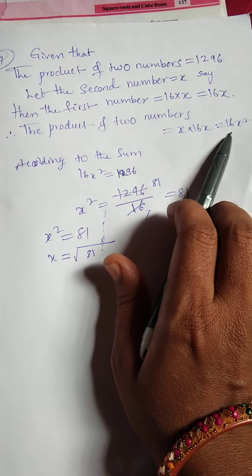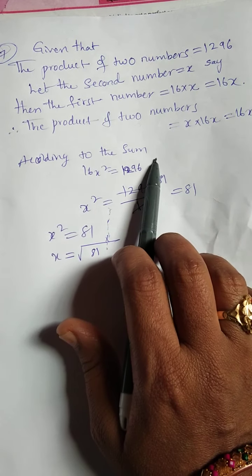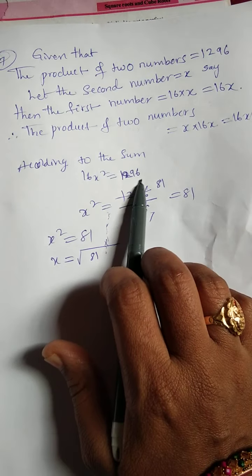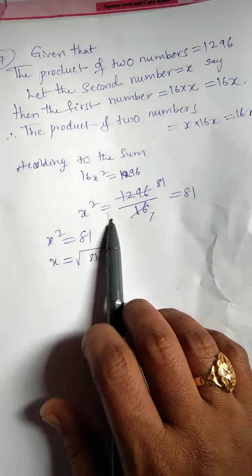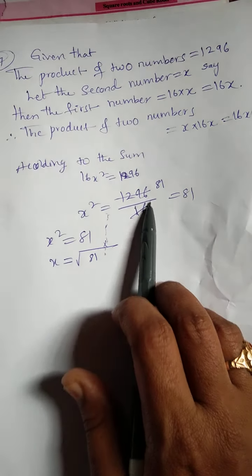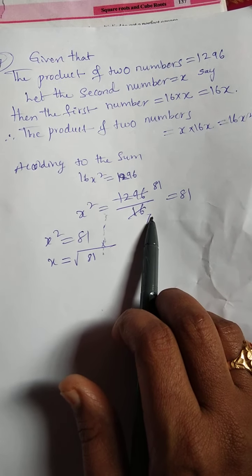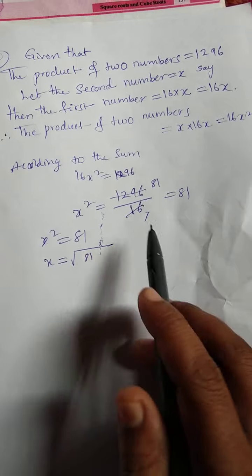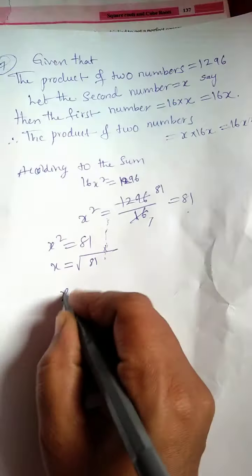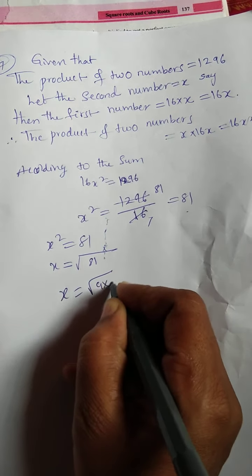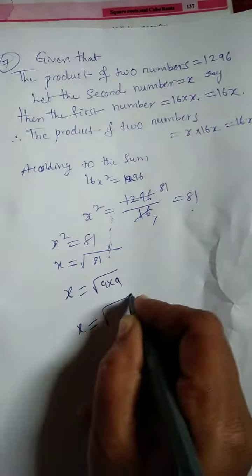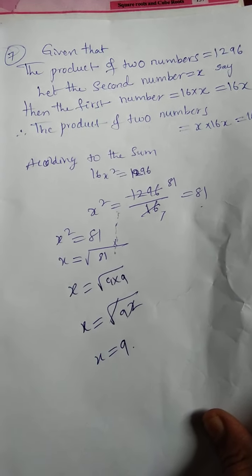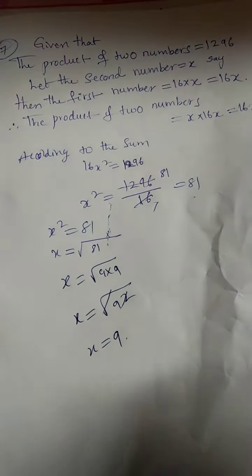The product of two numbers x into 16x equals 16x squared. According to the problem, 16x squared equals 1296, so x squared equals 1296 divided by 16, which gives 81. Therefore x equals square root of 81. Since 81 equals 9 into 9, x equals 9. So the answer is x equals 9.